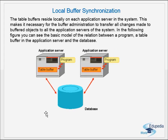The table buffers reside locally on each application server in the system. This makes it necessary for the buffer administration to transfer all changes made to buffered objects to all the application servers of the system. Each application server has its own buffers. In the following figure you can see the basic model of the relation between a program or table buffer in the application server and the database.